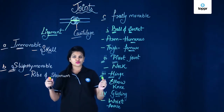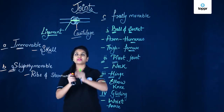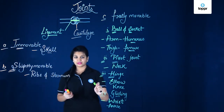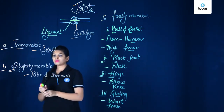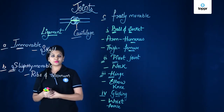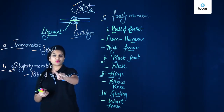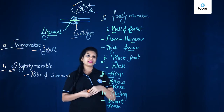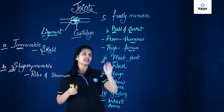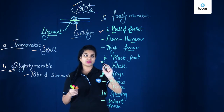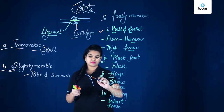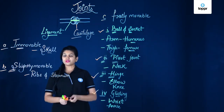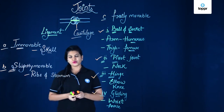So this was about the joints. In this lesson you have learned the structure of a joint where two bones are connected with the help of ligament. We have learned the different types of joints: firstly the immovable joints found in the skull, the slightly movable joint observed in the ribs and sternum, and the freely movable joints — which include the ball and socket, pivot, hinge, and gliding joint. Till now you have understood about bones and joints.